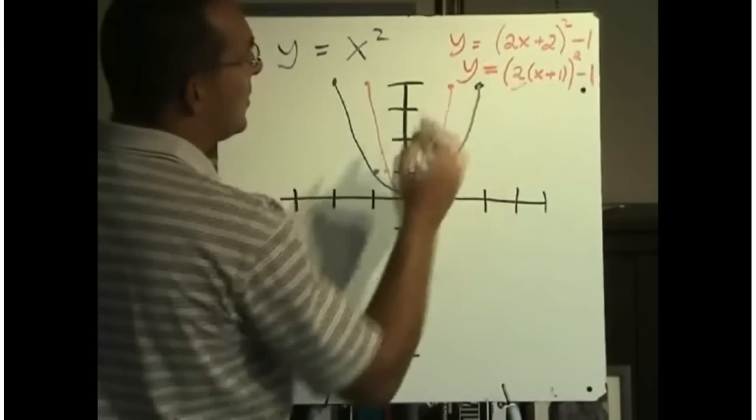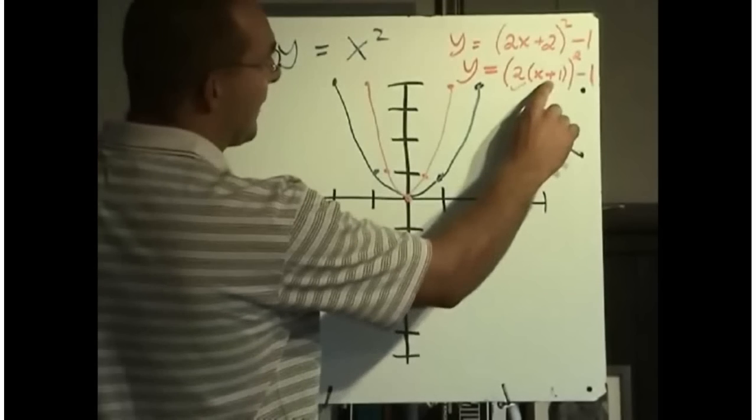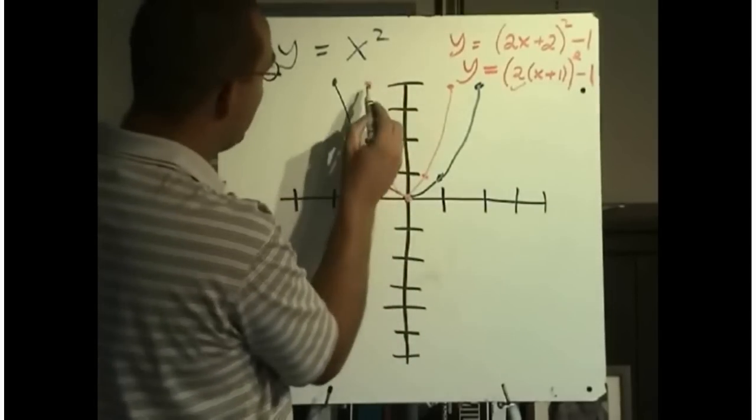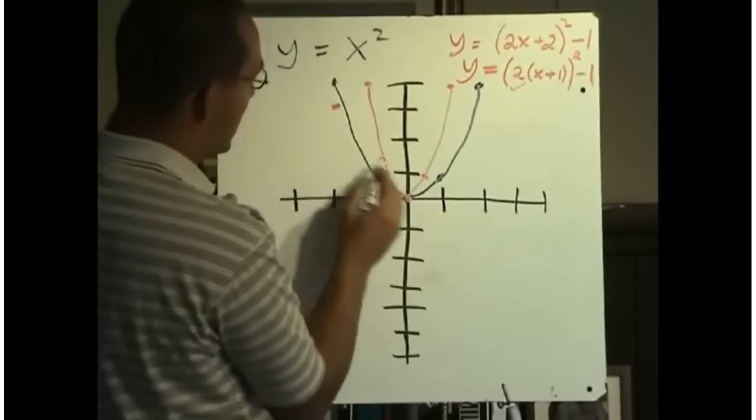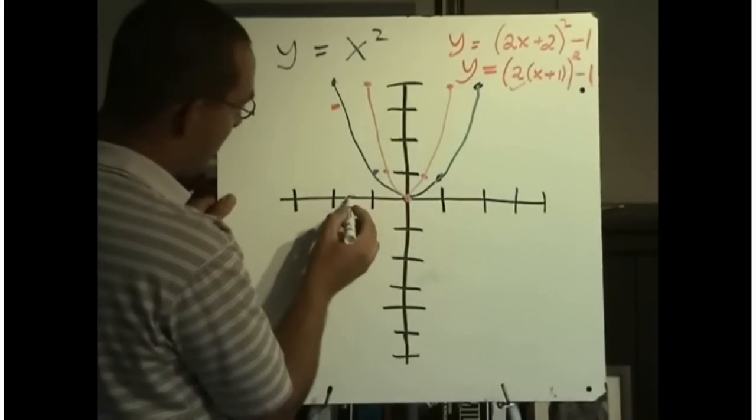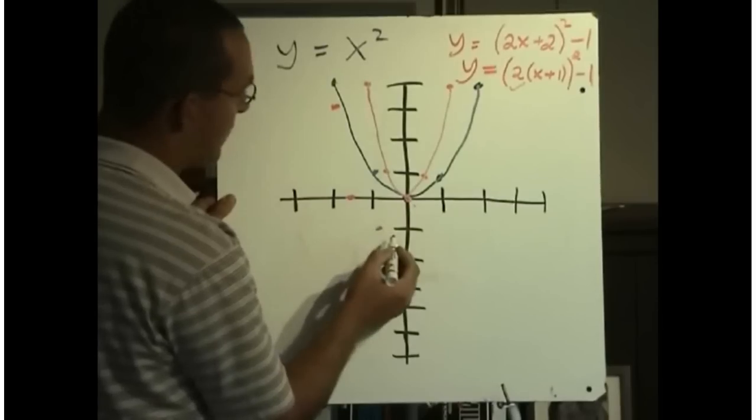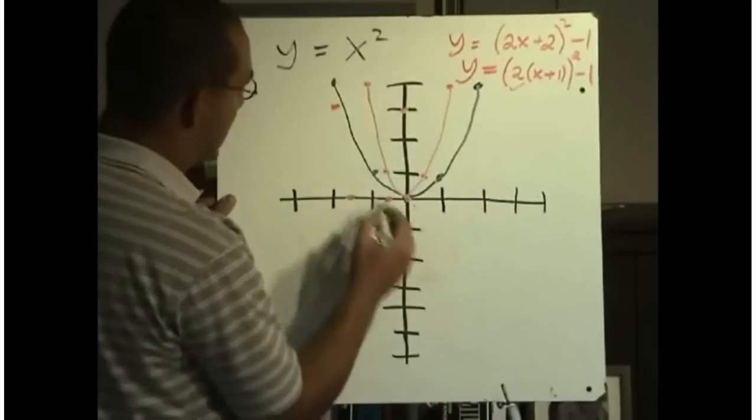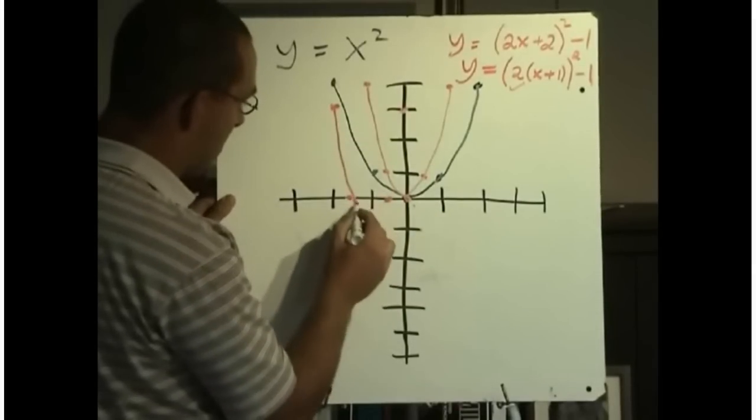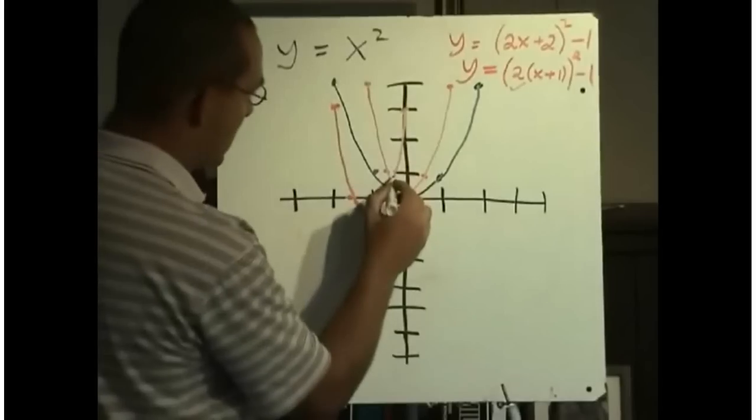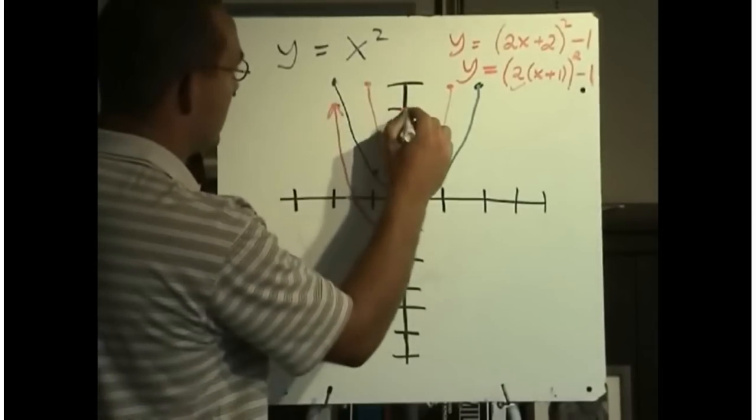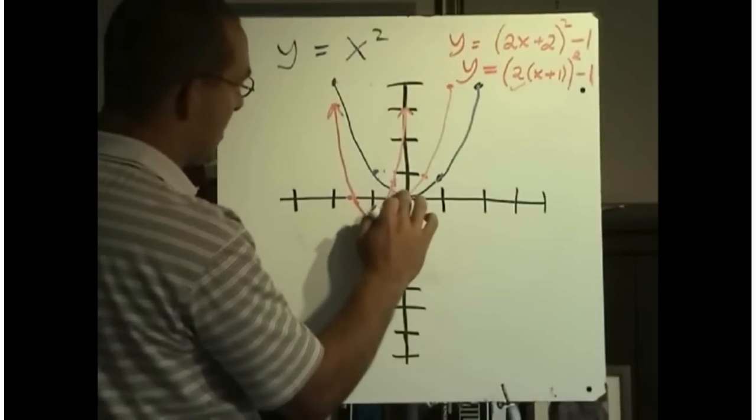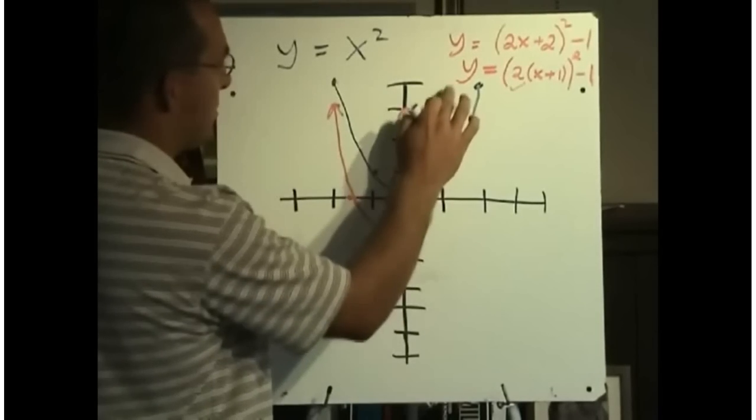So I have done my horizontal compression, but I still need to move it left 1, and then move it down 1. I can probably do these 2 steps in one move here. I just need to take each point and move it left 1 and down 1. This point will move to here. This point, left 1, down 1, has moved to here. This point, left 1, down 1, moved to here. This point, left 1, down 1. And finally this point, left 1, down 1. And now I can reconnect my points. And I get my graph of y equals 2 bracket x plus 1 all squared minus 1. And then it's important to erase any of the other little sketches that you might have done to get to your final solution.